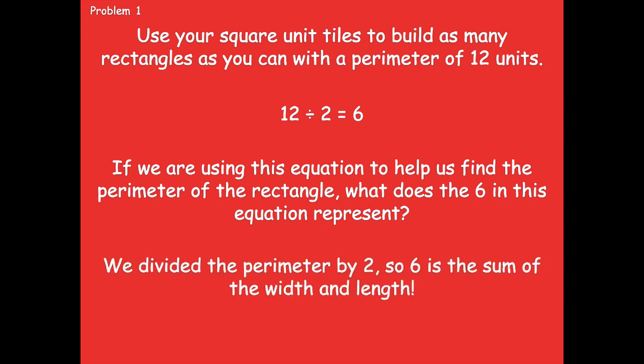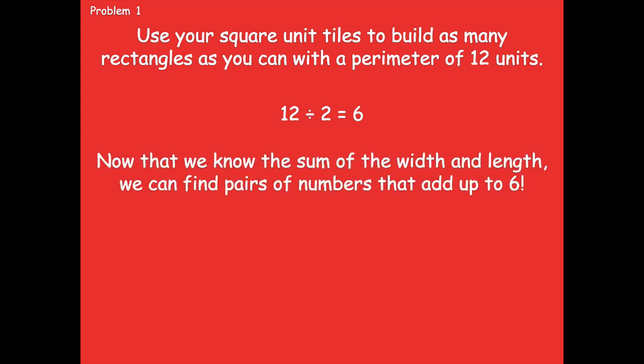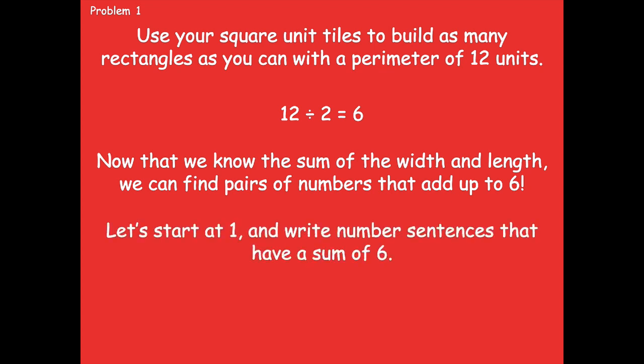We divided the perimeter by 2, so 6 is the sum of the width and the length — because we said we doubled the sum of the width and the length to get 12, so cutting it in half gives us that sum. Now that we know the sum of the width and the length is 6, we can find pairs of numbers that add up to 6. Starting at 1: 1 plus 5 equals 6. Then 2 plus what equals 6?